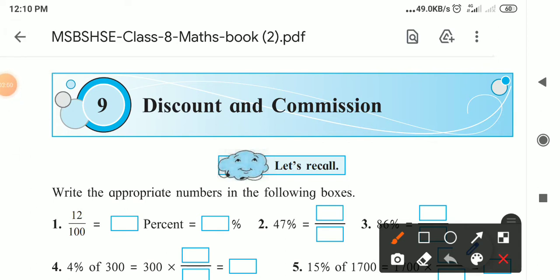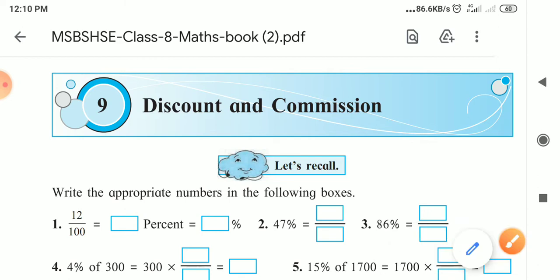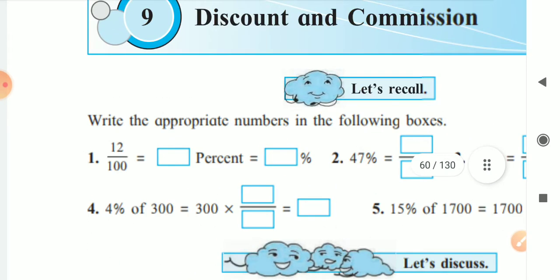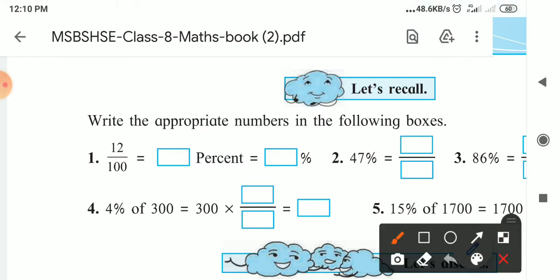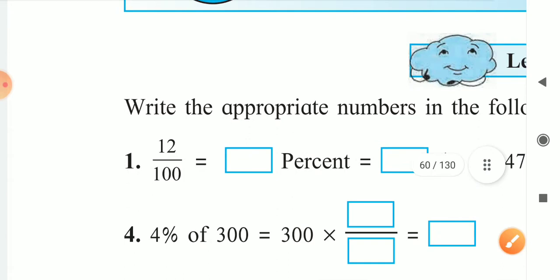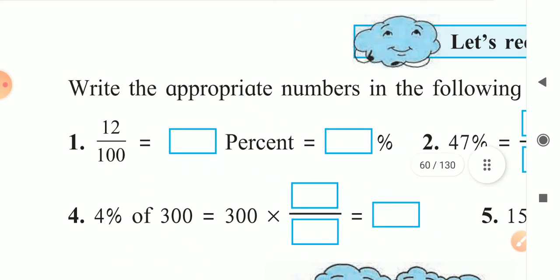Discount means the shopkeeper sells the article at a reduced price to increase the quantity of selling — he is providing a discount. Commission means to finalize the deal, we give commission to an agent. Both discount and commission are expressed in percentage.